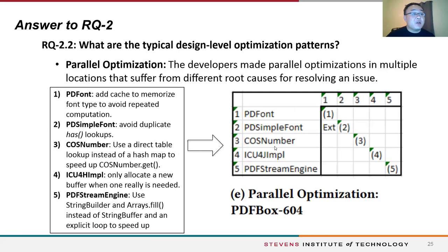The last pattern is parallel optimization, where developers made parallel improvements in multiple locations that suffer from different root causes. In the example, class PDFont added a cache to avoid repeated computation, while class CosNumber uses a direct table lookup to replace an inefficient HashMap data structure. Each source file contains a separate optimization, but all belong to the text instruction component.